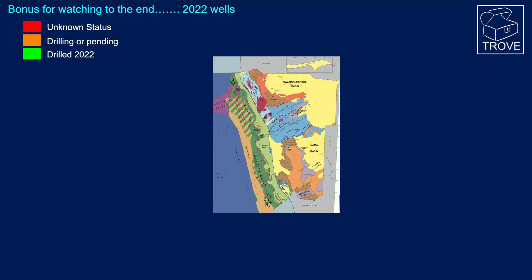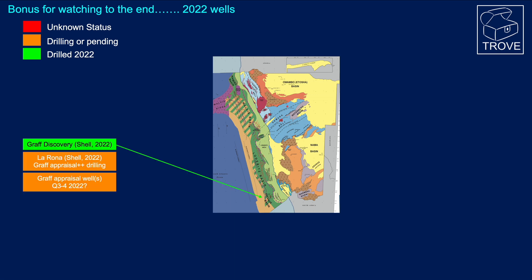Here's a bonus for those who've stayed to the end. We're going to look at the 2022 wells — those that have drilled, those drilling, or pending spud. We'll start with Shell and the Graf discovery. They're well into drilling the La Rona well, which is in part an appraisal of the Graf discovery but also has some exploration targets. We expect follow-up appraisal wells into the third and fourth quarter of 2022 on the Graf discovery.